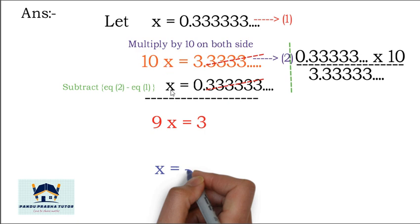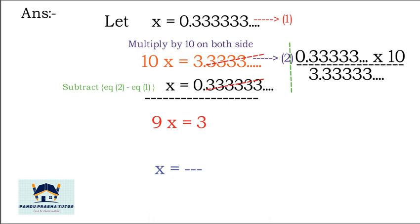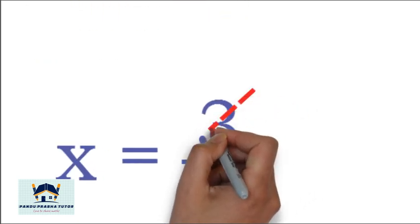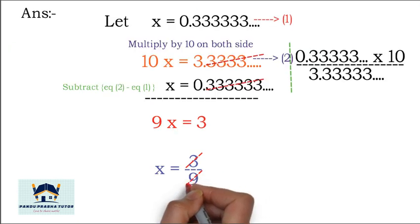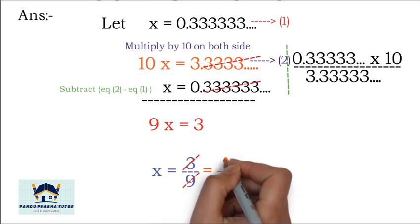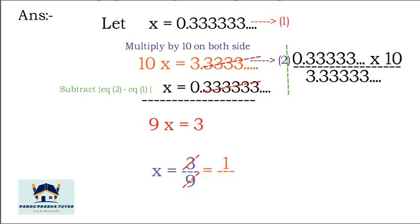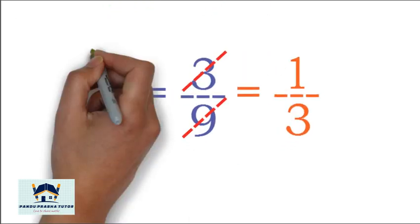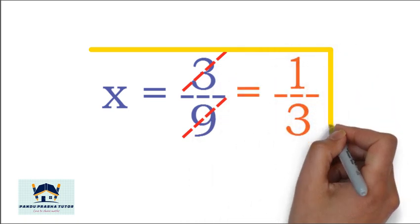10x minus x is 9x. The recurring part cancels, giving 9x = 3. Therefore x = 3/9, which simplifies to x = 1/3.